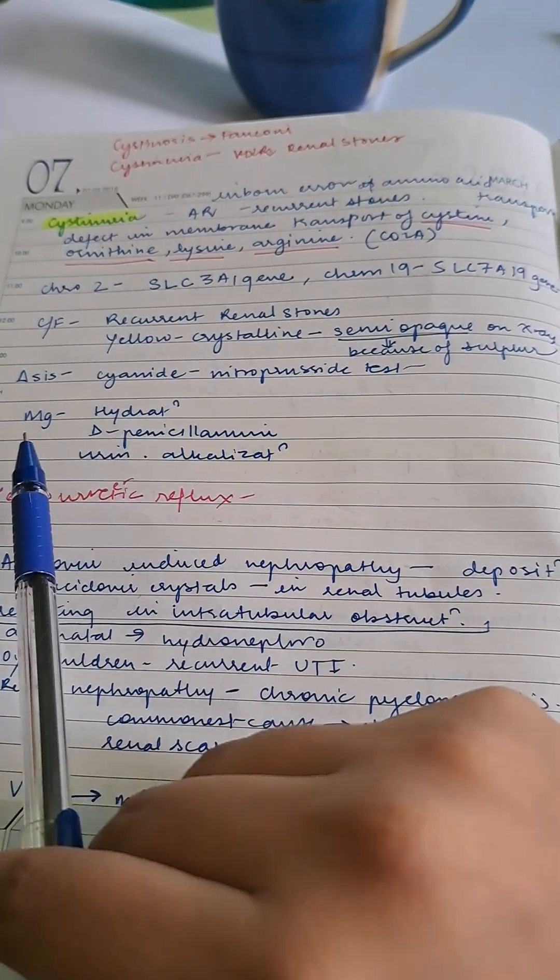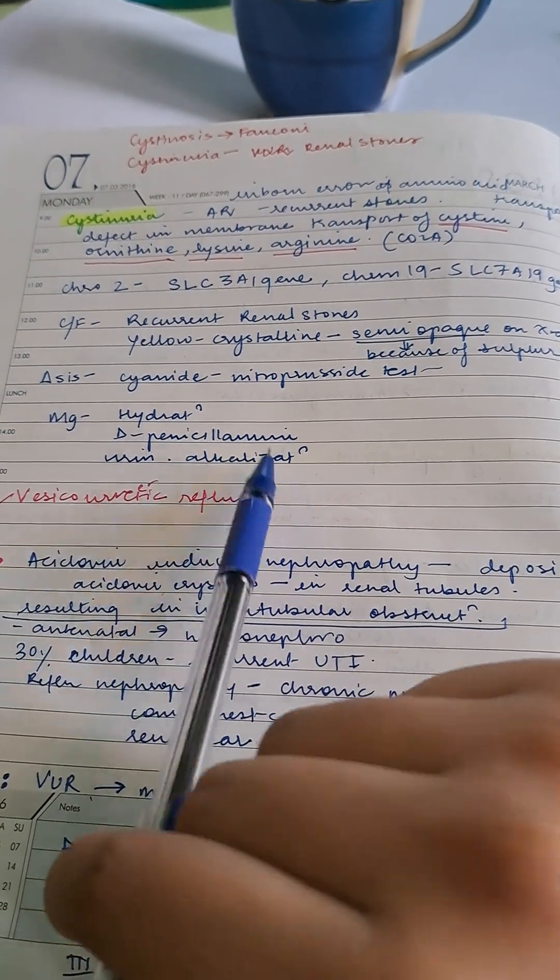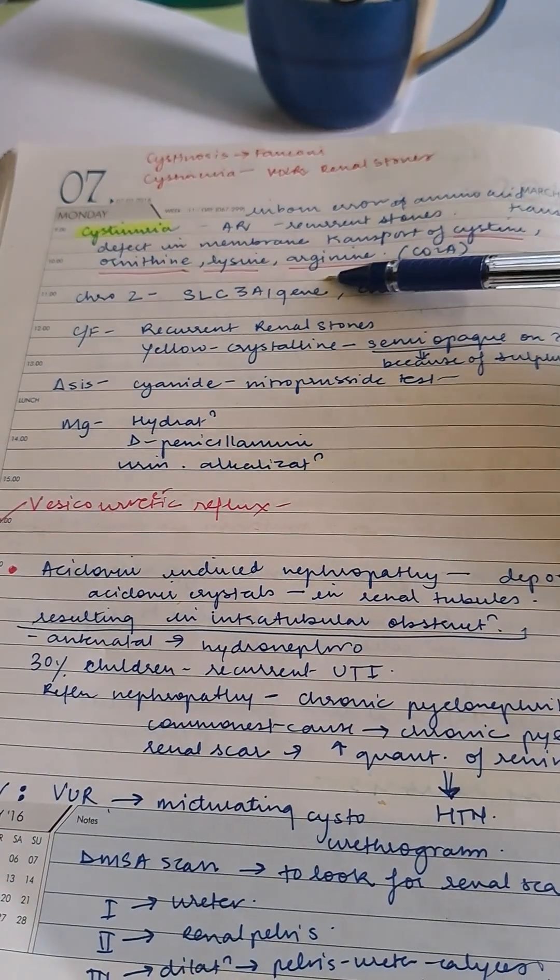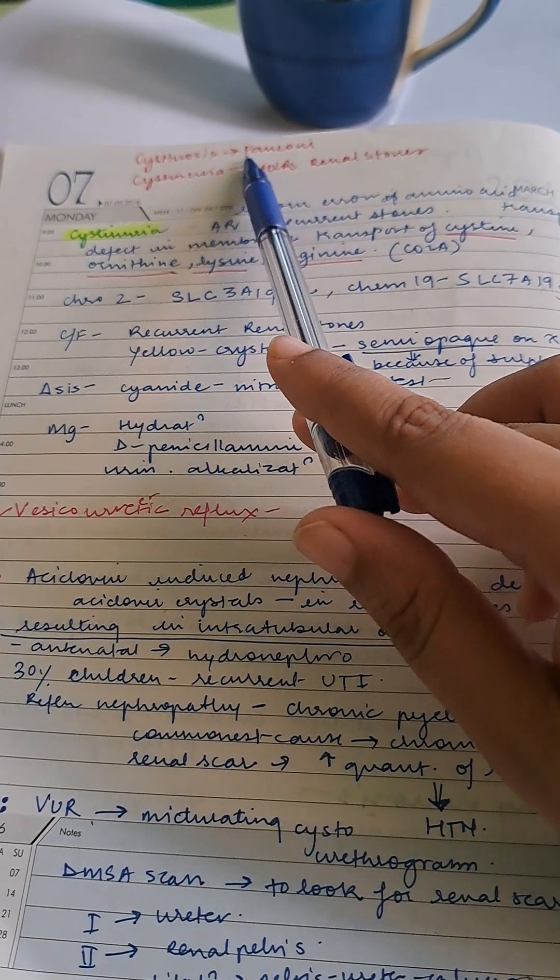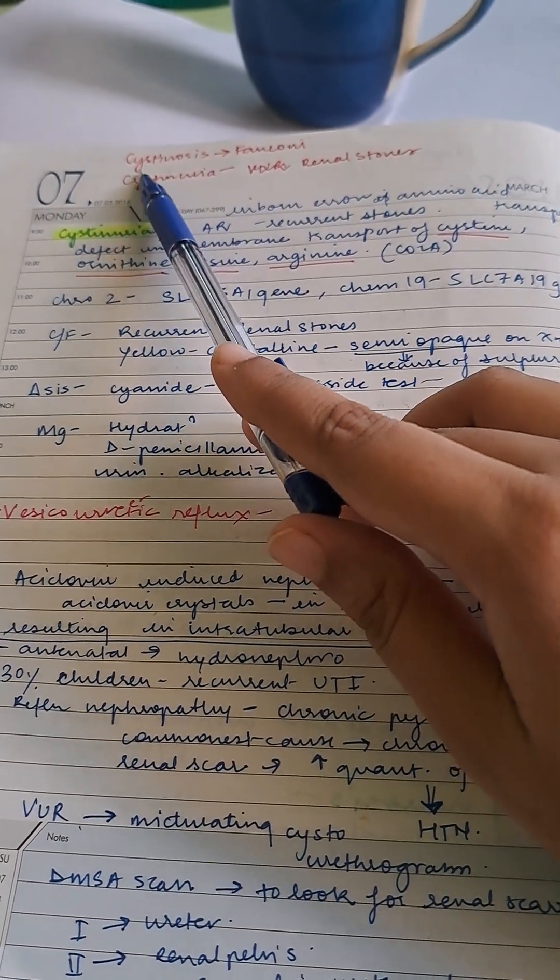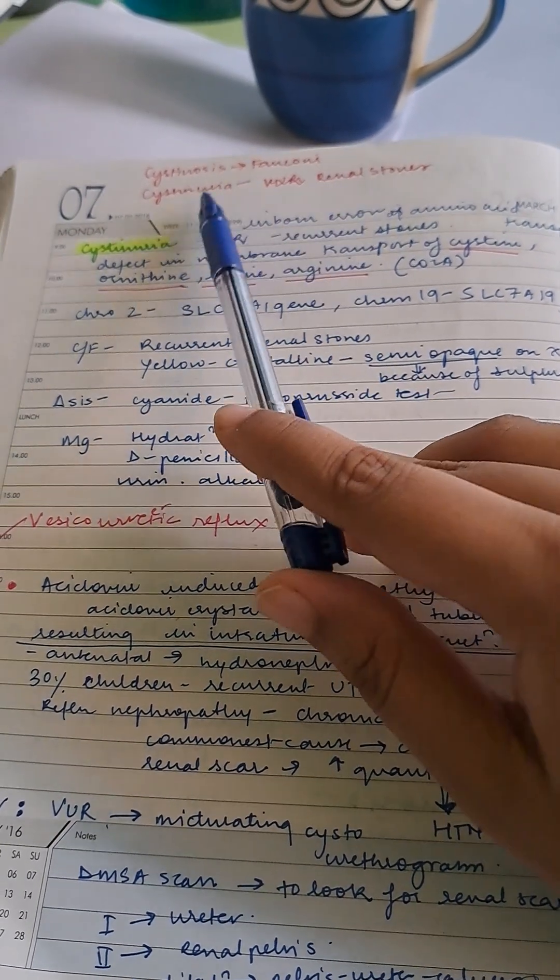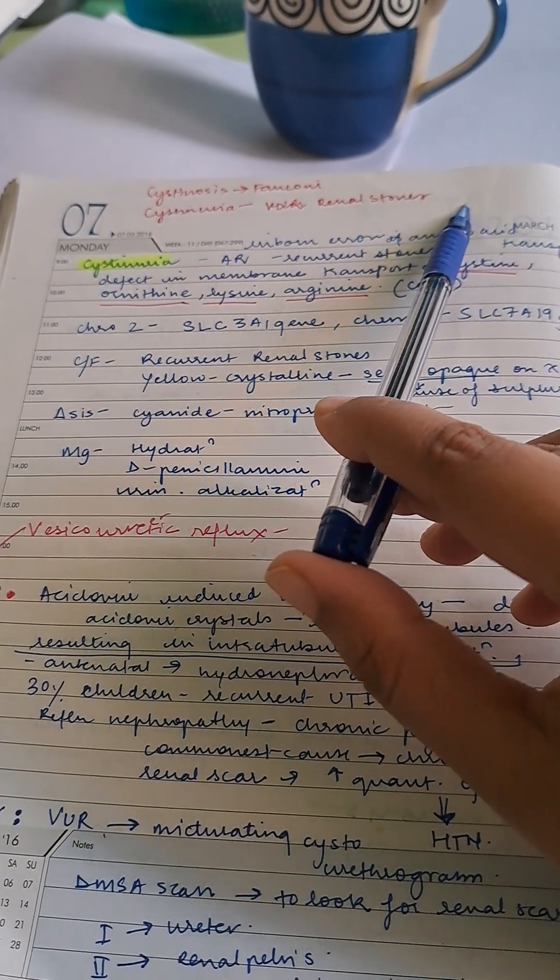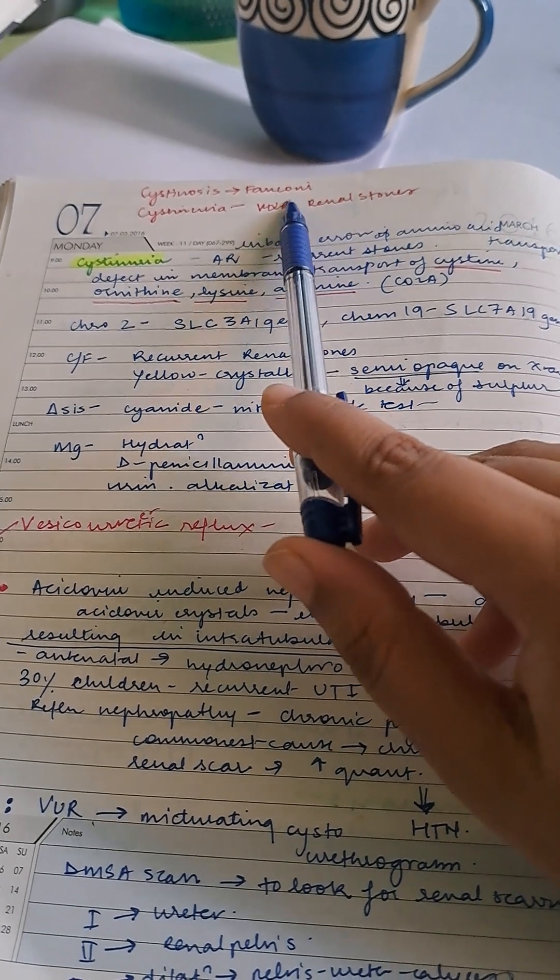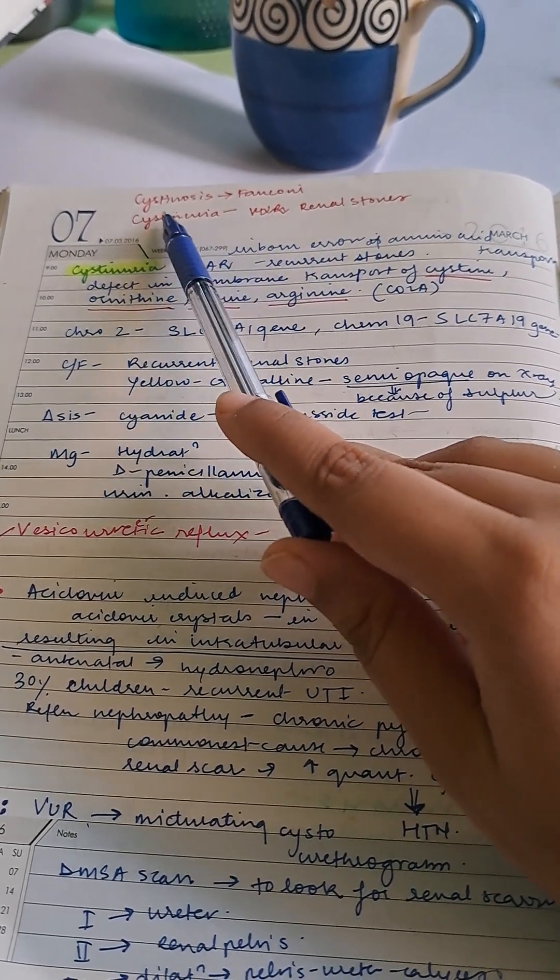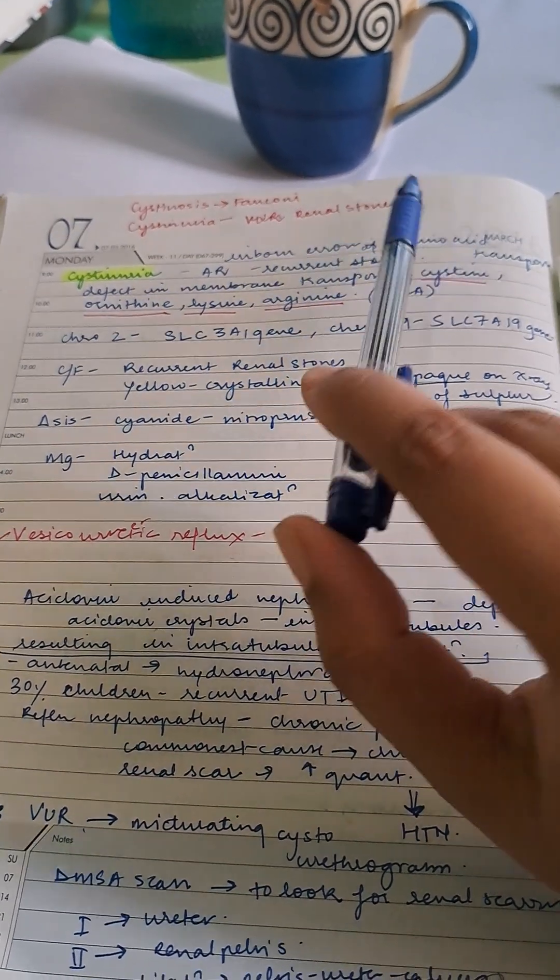Diagnosis is by cyanide nitroprusside test. Management includes hydration, D-penicillamine, and urine alkalinization. Note: cystinosis causes Fanconi syndrome—Fanconi has an O. Cystinuria means urea, which means renal stones will be there.